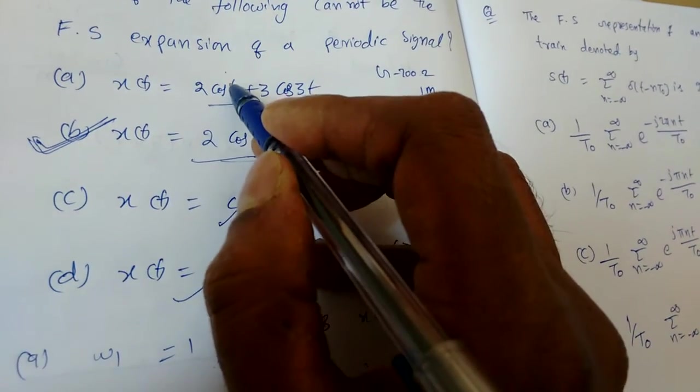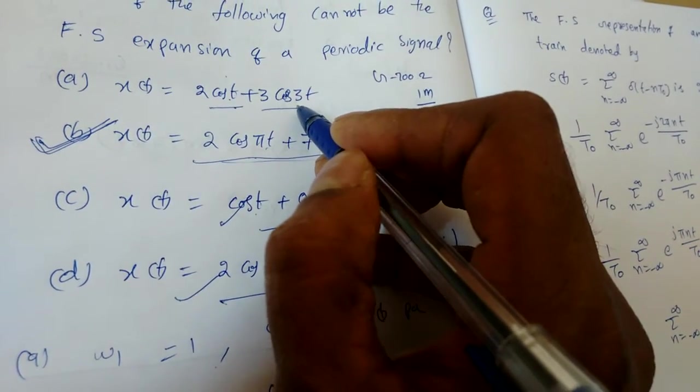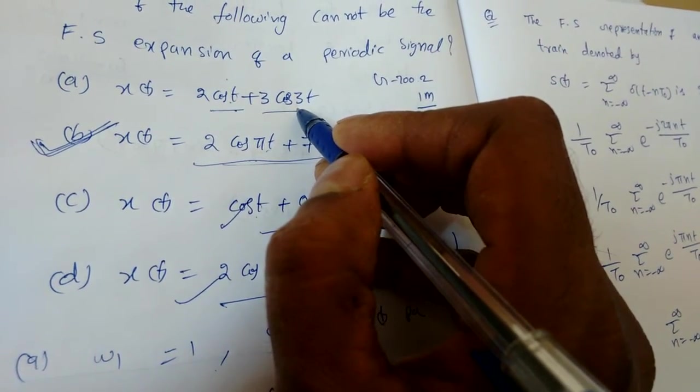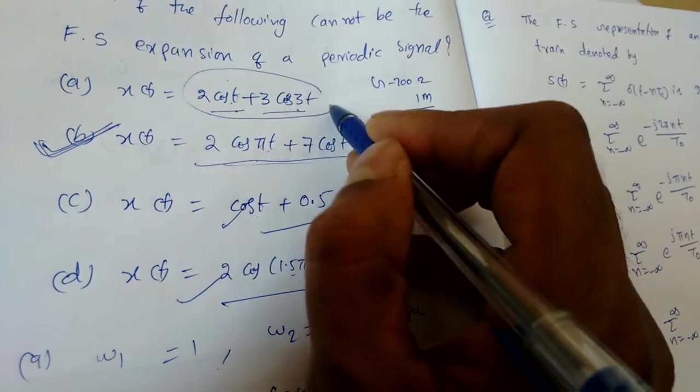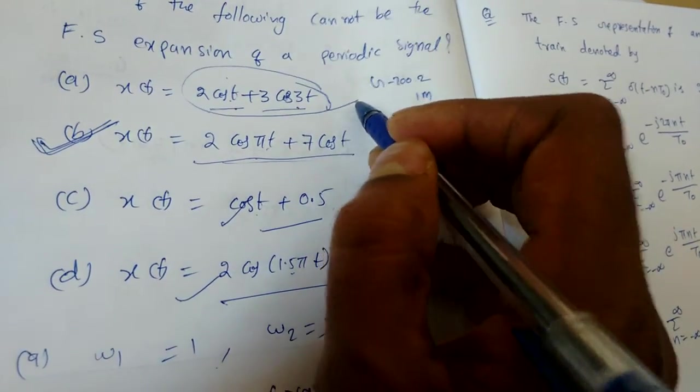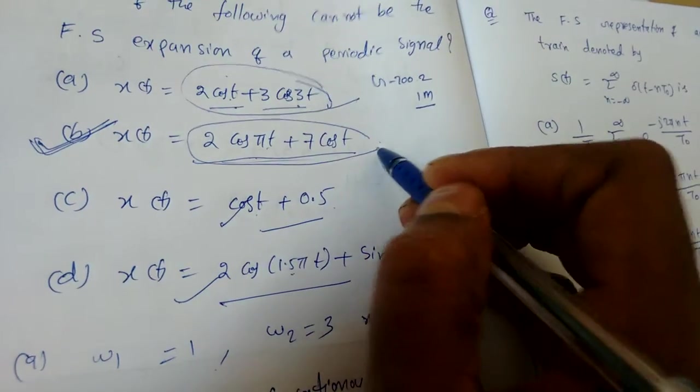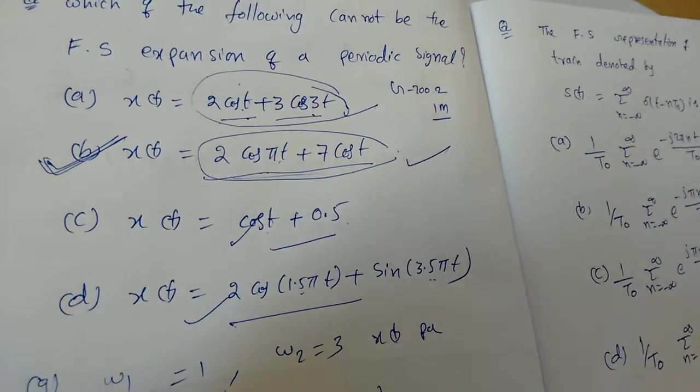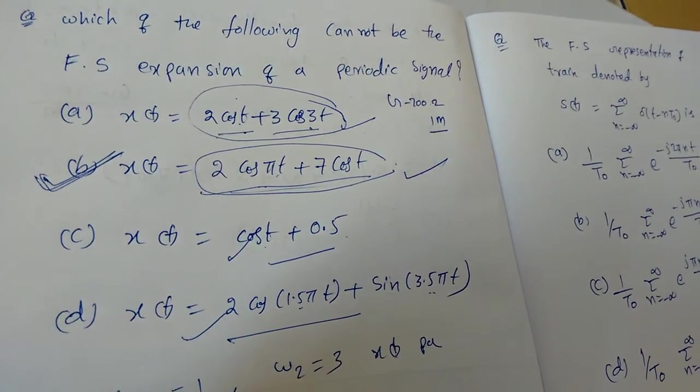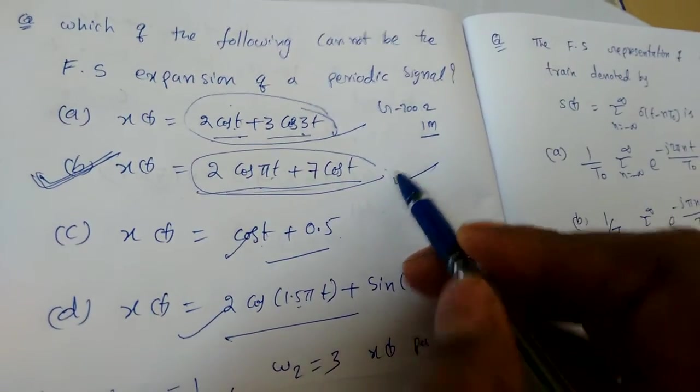See here, this omega 1 is not containing pi. That means the second signal also should not contain any pi. So it is not containing any pi term, so it is also periodic. This one also, not periodic. So Fourier series expansion cannot be done for this signal.